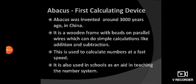So our next topic is abacus, the first calculating device. This was invented around 3000 years ago in China. It is a wooden frame with beads on parallel wires which can do simple calculations like addition and subtraction. This is used to calculate numbers at a fast speed.